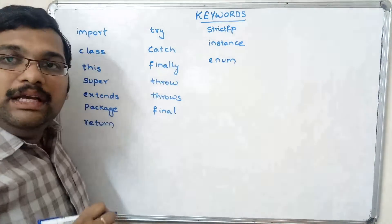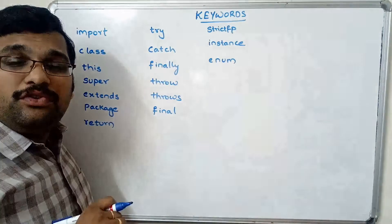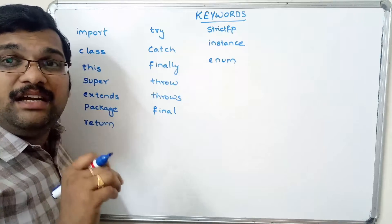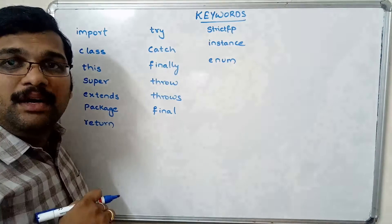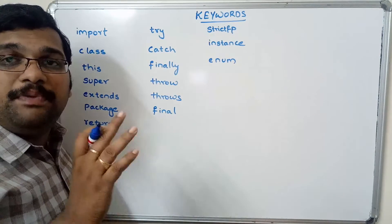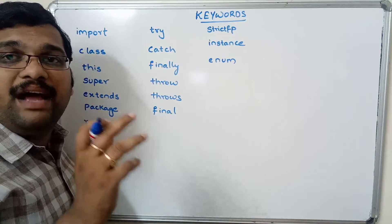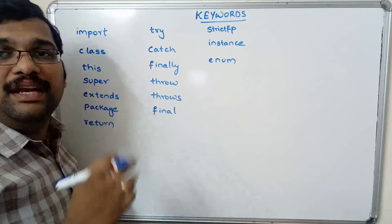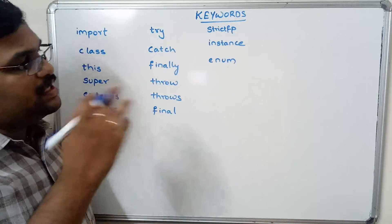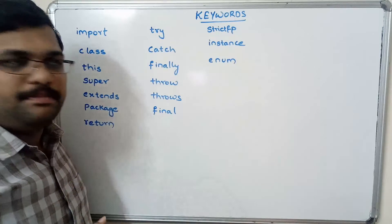The enum keyword is used as a special data type which gives some predefined values to a variable.